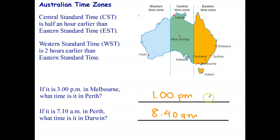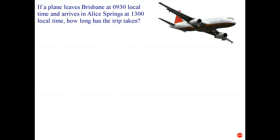So overall, Australian time zones are pretty simple because there's only three time zones to worry about. Okay, let's try one last question. If a plane leaves Brisbane at 9:30 local time and arrives in Alice Springs at 1300 local time, how long has the trip taken?